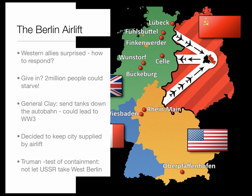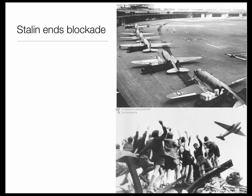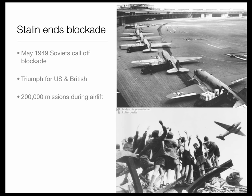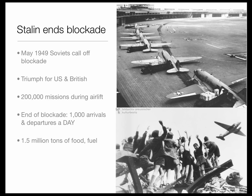For Truman, however, it was a test of the containment policy. He was determined not to let the USSR take West Berlin. Ultimately, the blockade failed and the airlift was a success. In May of 1949, the Soviets called off the blockade. It was seen as a triumph in the West for the United States and Britain, whose air forces had supplied the West Berliners. An astonishing 200,000 missions were flown during the airlift. By the end of the blockade, 1,000 arrivals and departures a day were moving into the three airports of West Berlin. Sometimes planes would land and had to leave within 90 seconds — one and a half million tons of food and fuel delivered.